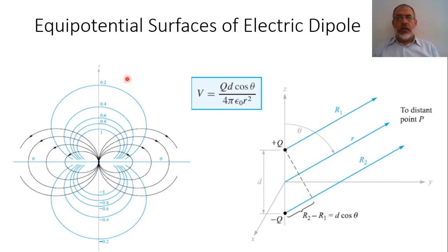Another important theory in Electromagnetics which will be useful in our study for Microwave Circuits is Image Theory. Image Theory is discussed in the book Microwave Engineering by Pozar in some complicated way, so I'm going to follow the explanation of Image Theory from the book Engineering Electromagnetics by Hayt.